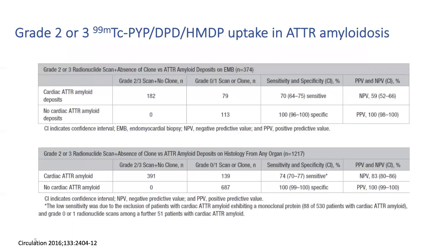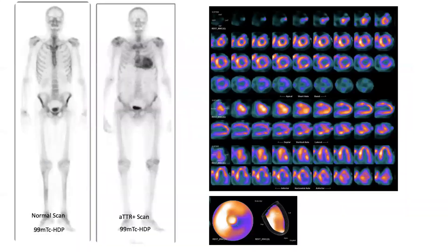The use of SPECT can increase the sensitivity and specificity of scintigraphy. The on-off signal approach is limited to a sensitivity of around 10%, generally due to the equivocal sign of Perugini 1. So as stated, the use of SPECT can significantly increase the sensitivity of the technique.